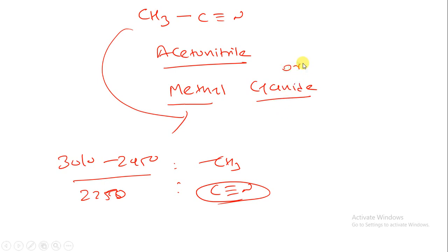Remember that the data will be given in your examination paper, so you need not worry about memorizing it. At least you should have an idea by calculating approximately 30 to 40 examples. You will develop an idea of which type of peaks occur in which region. Now let us understand one more example.